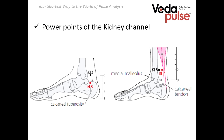Point number seven is the Fuliu point, which means 'additional flowing.' It's a tonic point for the kidney channel, located two cun above the level of the inner ankle along the border of the Achilles tendon, in the zone where the tendon starts its transition to the calf muscles. It can be used in combination with point number four of the kidney channel. It has a specific diuretic effect and can be used in glaucoma or in overweight.